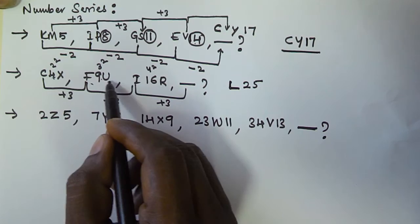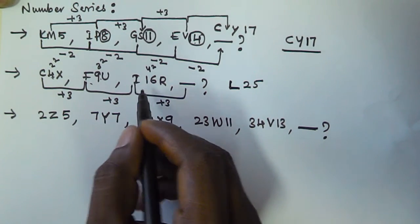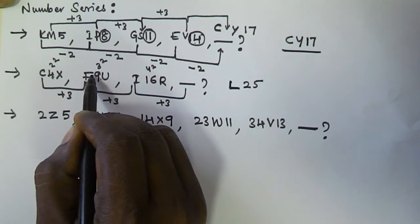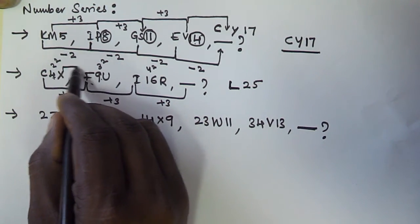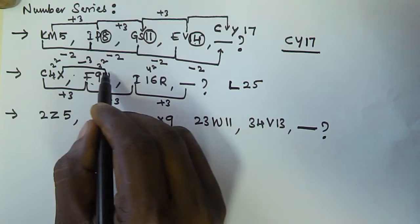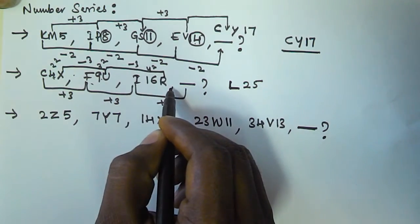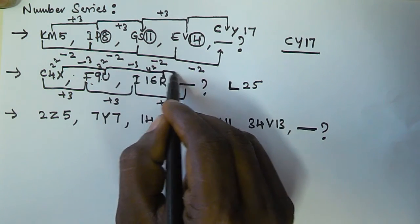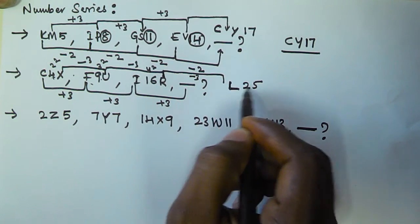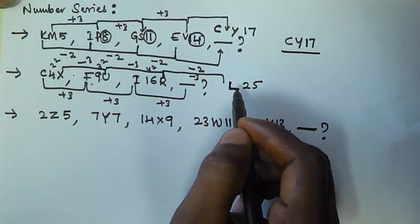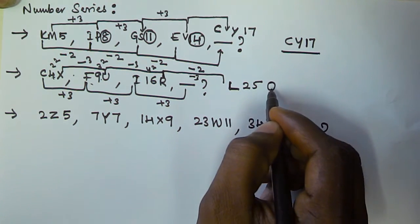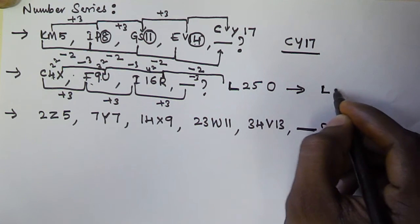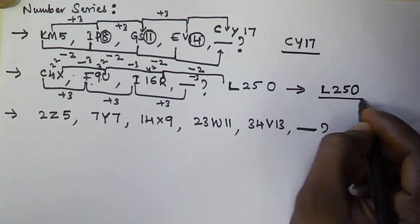For the last letters X, U, R: from X to U is minus three (U, V, W, X), from U to R is minus three (R, S, T, U). So the next is three positions backward from R: O, P, Q, R — giving us O. Therefore the next term in this series is L25O.